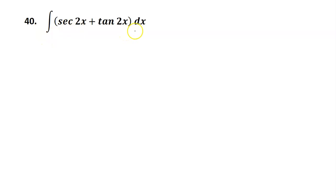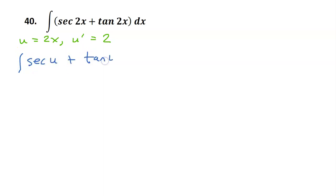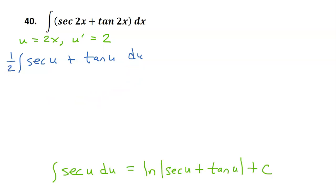For number 40, I think I'll try to do it without splitting it up first. So u will equal 2x, which means that u prime will equal 2. Making the substitution, we have the integral of secant u plus tangent u. Instead of dx we will write du over u prime, so that's du over 2, which will be the same thing as a 1 half in the front. We are about to need another rule: the integral of secant u du is equal to the natural log of the absolute value of secant u plus tangent u plus c.